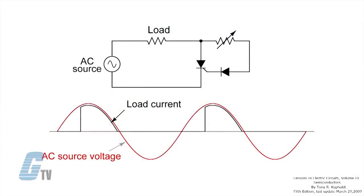In an AC circuit it is possible to control what portion of each half cycle is passed through the SCR by controlling the time of the gate pulse relative to zero crossing.